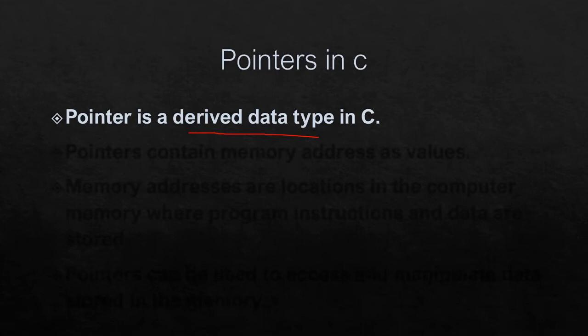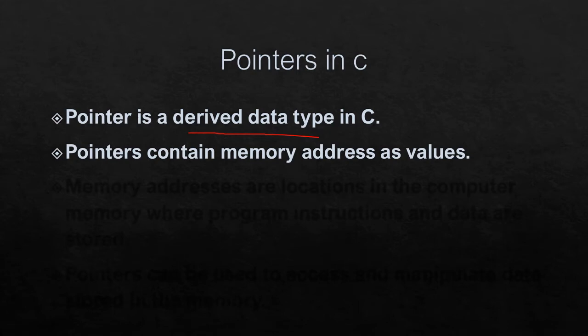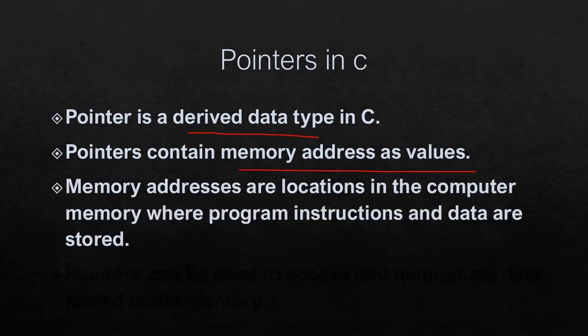What does a pointer contain? A pointer contains memory address as its value. A normal variable holds a value like 10.5, but pointers hold a memory address. Memory address is the name of locations in computer memory where program instructions and data are stored.